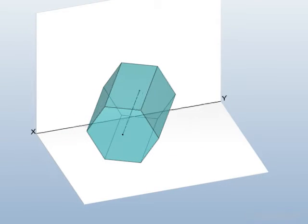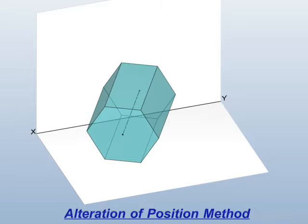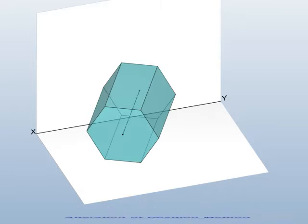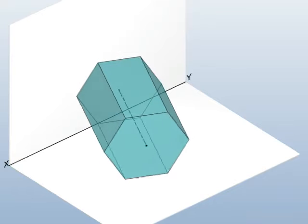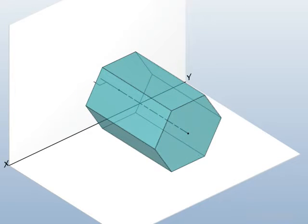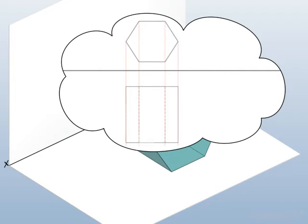To solve such problems, alteration of position method is used. Initially the axis of the solid is assumed to be perpendicular to one of the planes. Then view showing its true shape and size is drawn. Next, other views are constructed by projecting the details from the first view.